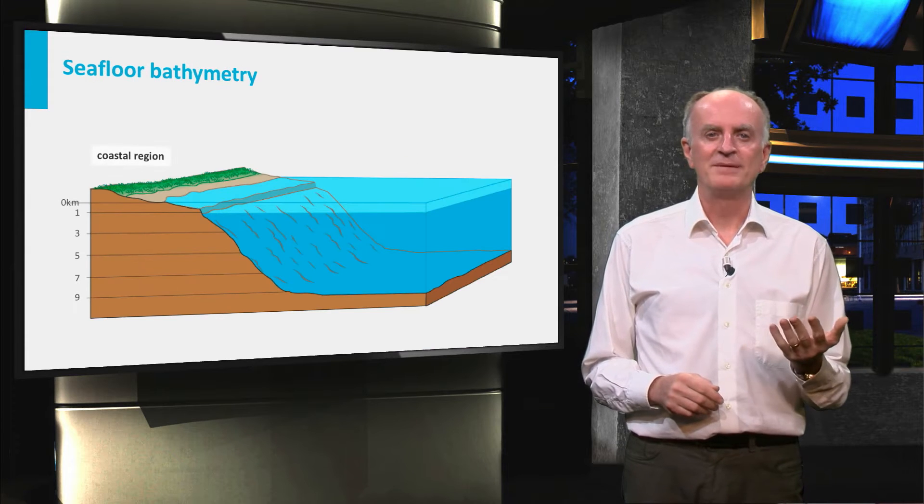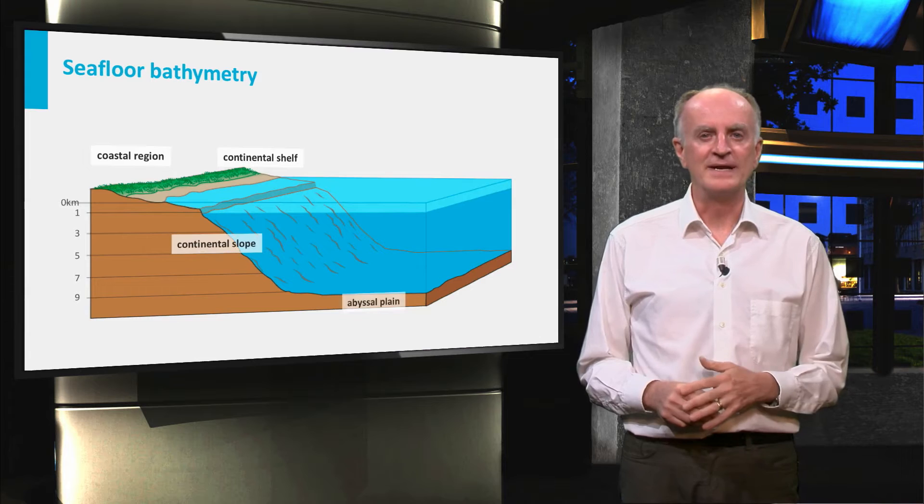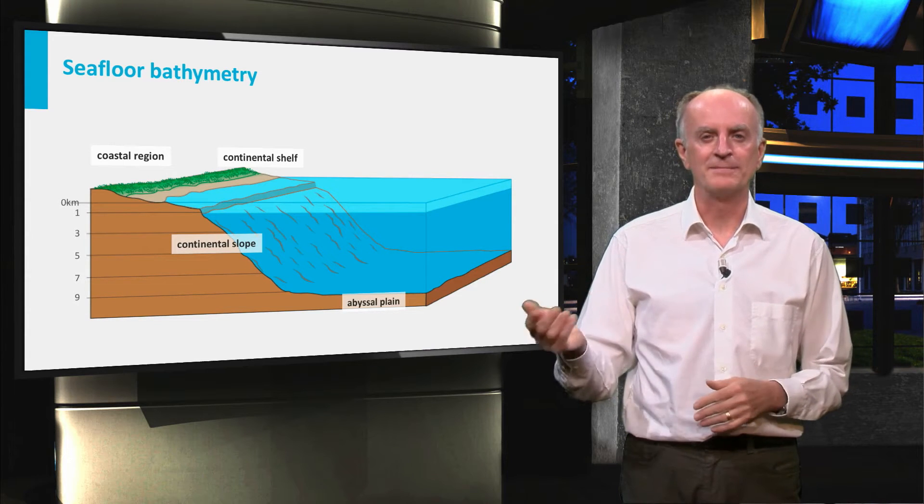You have seen this slide before. It shows the four main components of the marine domain: the coast, the shelf, the slope, and the abyssal plain.